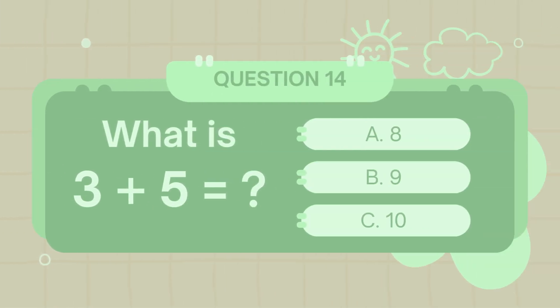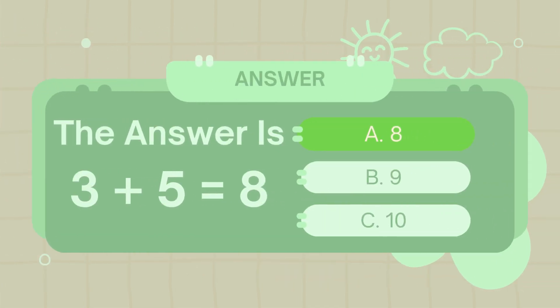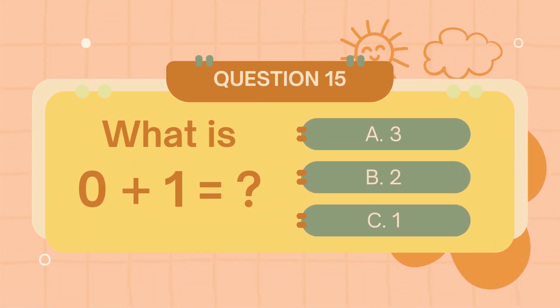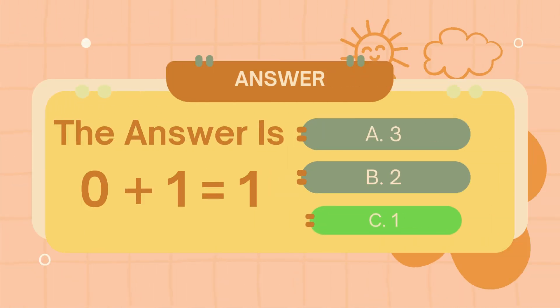What is 3 plus 5? The answer is 8. What is 0 plus 1? The answer is 1.